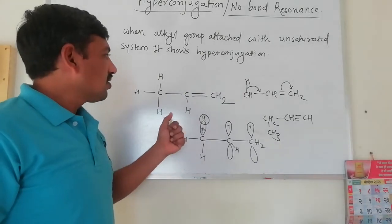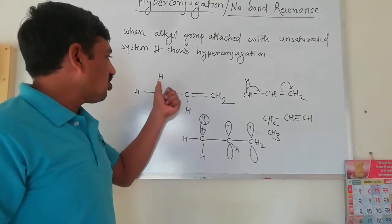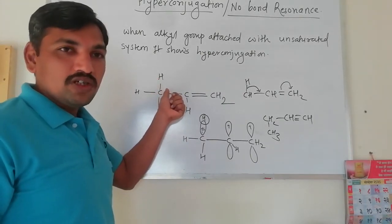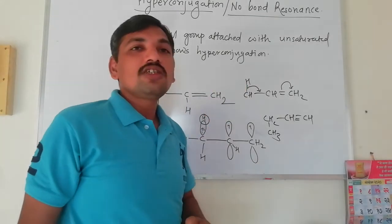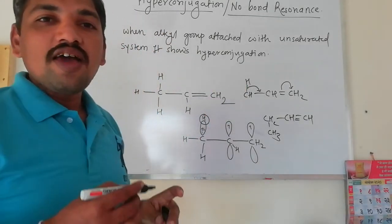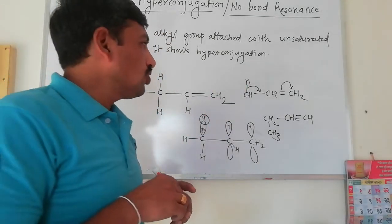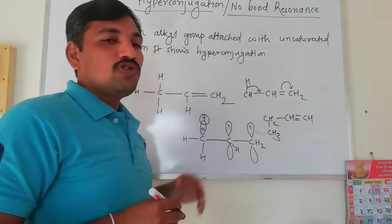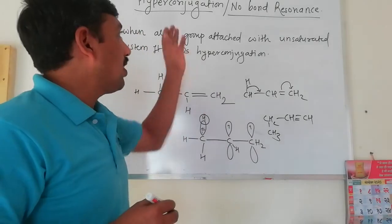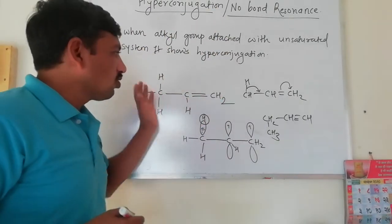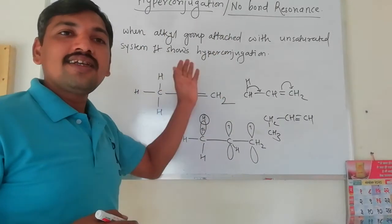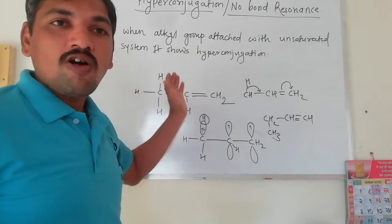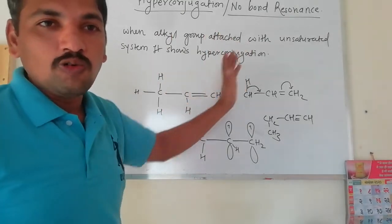Participation of the sigma bond of the alkyl group into the conjugation is called as hyperconjugation. Due to the hyperconjugation effect, the alkyl group acts as an electron donating group.